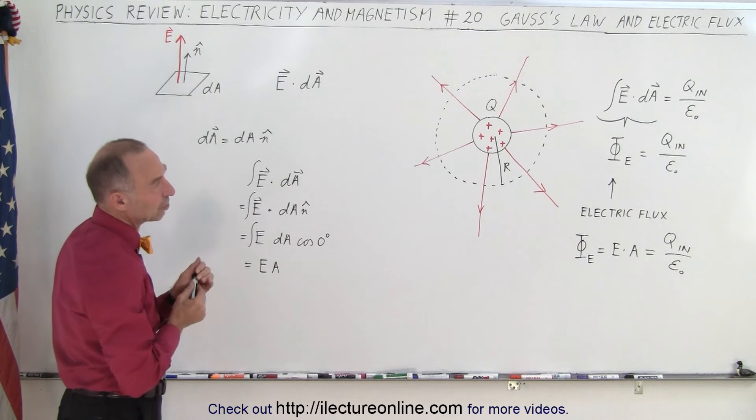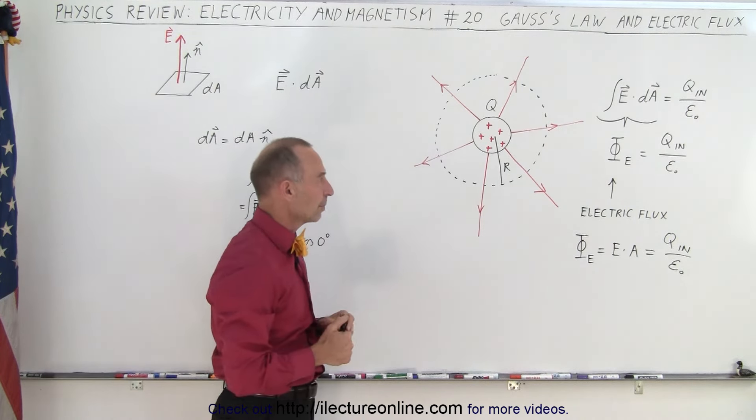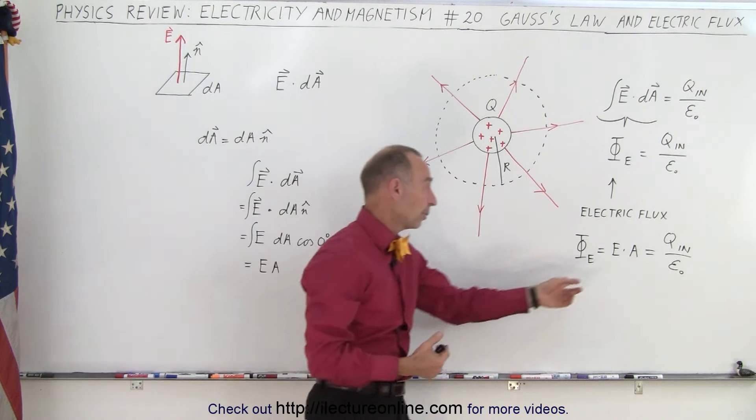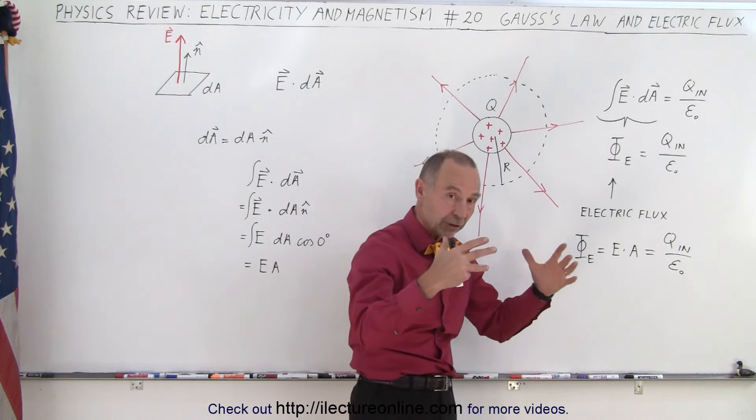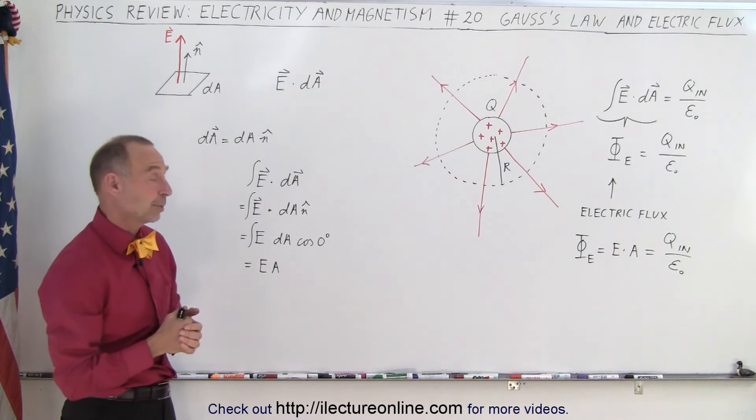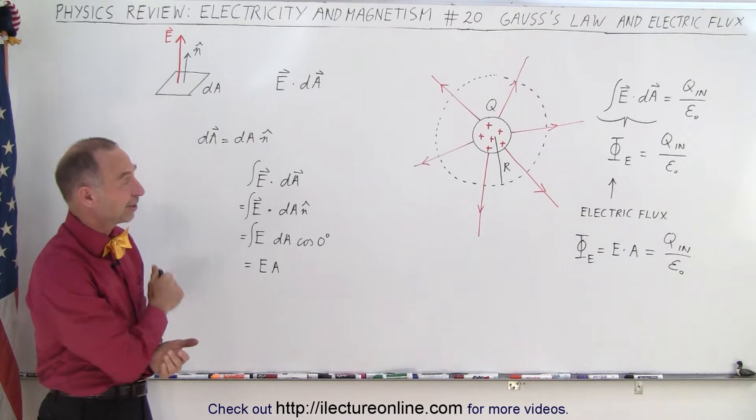And so now you can see the relationship between electric flux and Gauss's law. It's simply Q inside divided by epsilon sub nought, or sometimes we are given the strength of the electric field and the size of the area through which the flux goes, and we simply multiply the two to get the electric flux. Hopefully that clarifies it a bit. And that is how it's done.